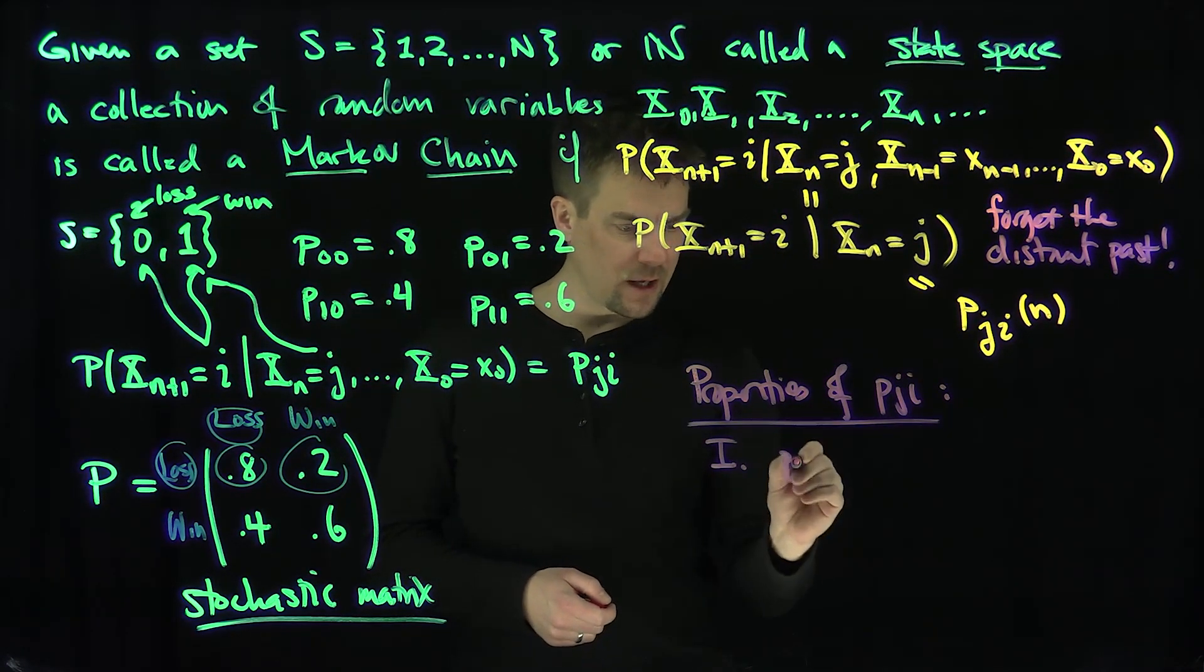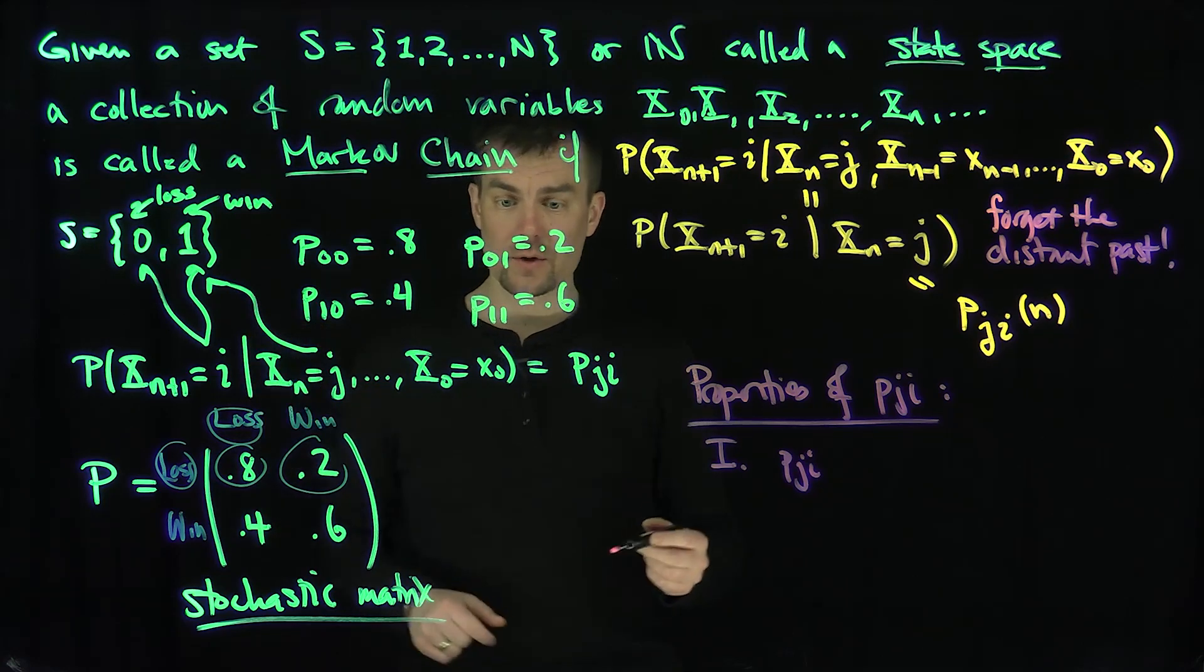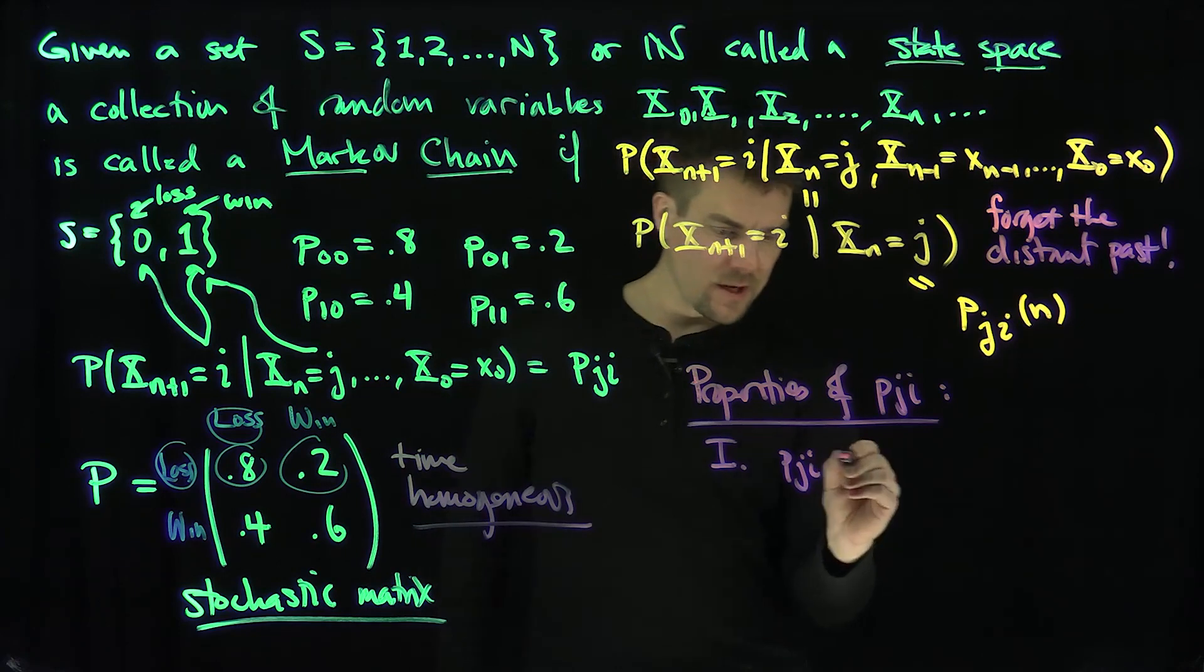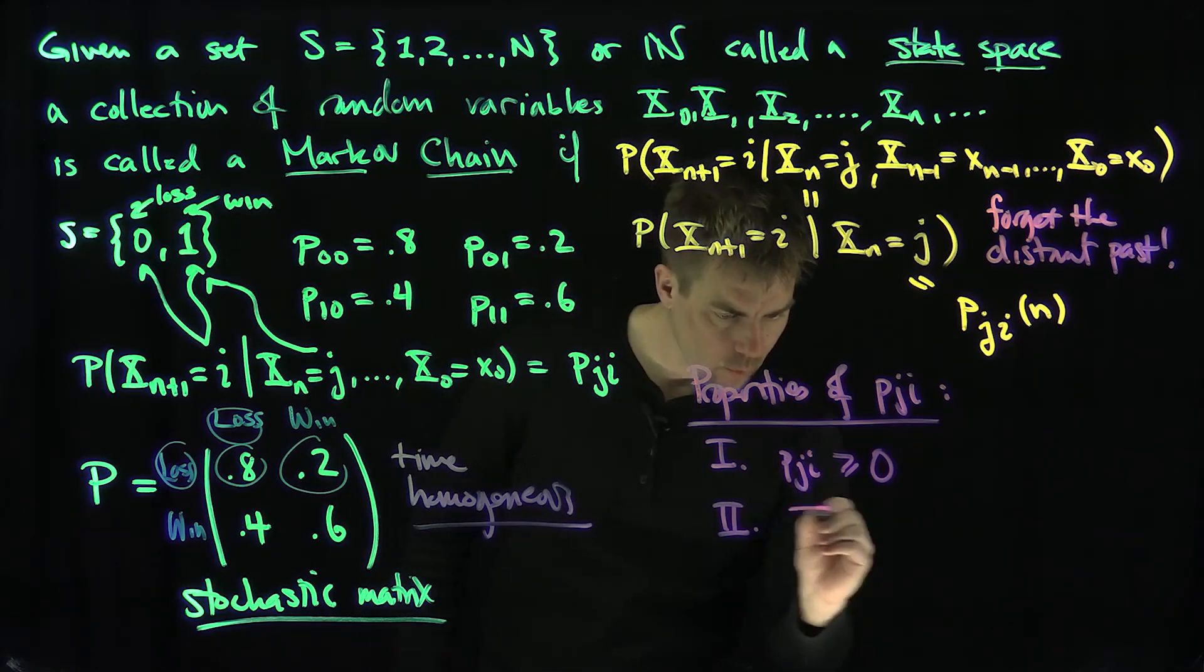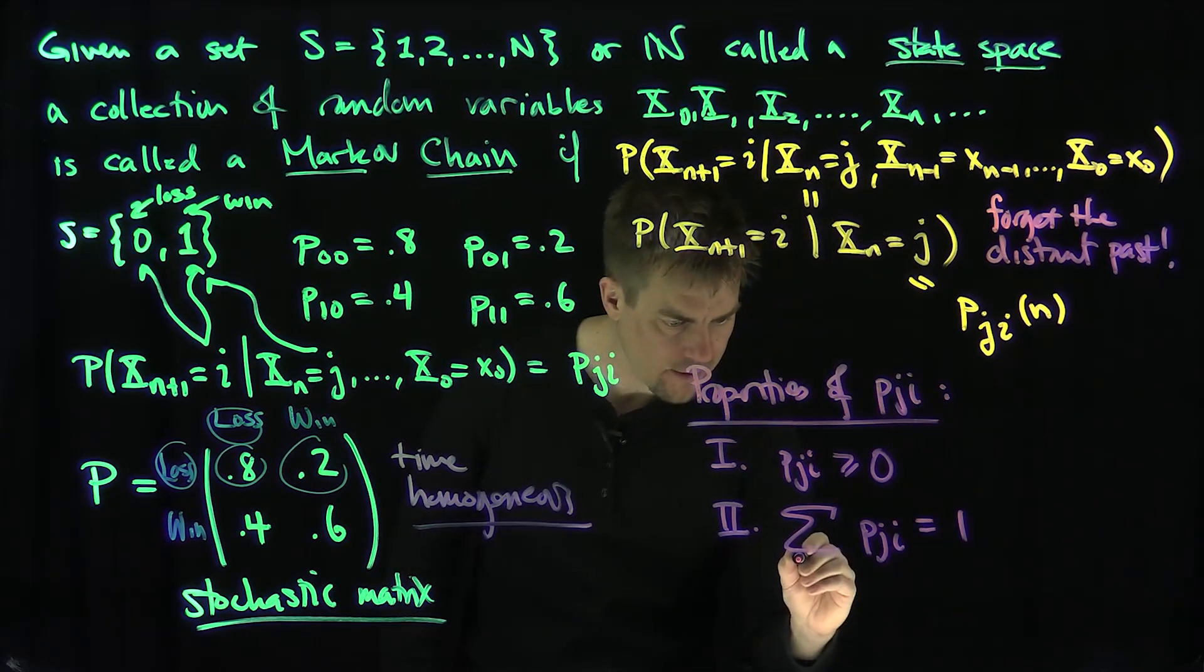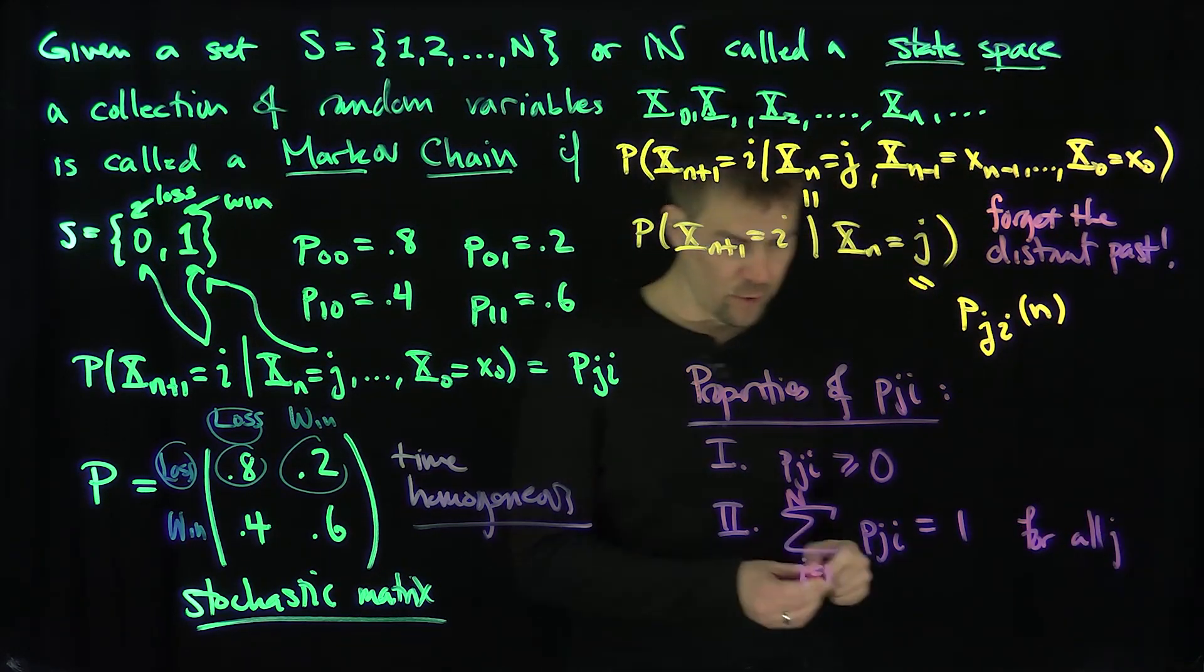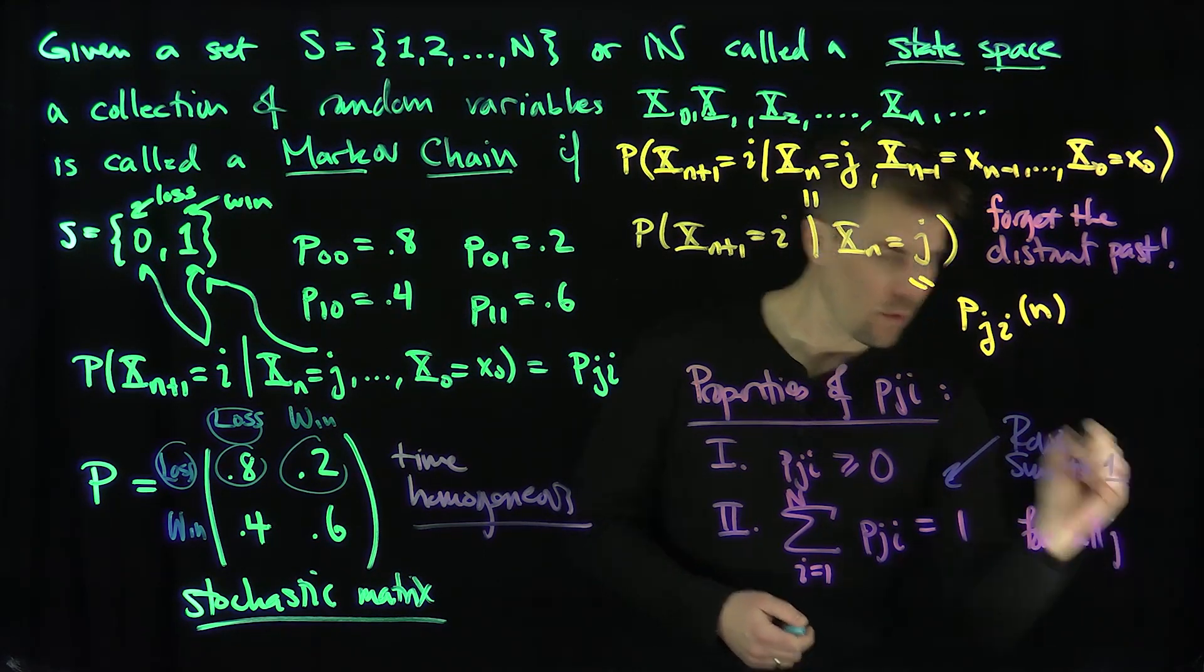Clearly the first property has to be that P_ji, and in principle this can depend on n, but for our example this is not the thing at n, this is for any time. This is called time homogeneous, doesn't depend on time. These numbers have to be non-negative because they're probabilities. And they have to sum up, every row in this matrix has to sum up to one. If I sum the P_ij, this has to be equal to one. If I sum over i from one up to N in this general case, it has to be equal to one for all j. That's just equivalent to saying that the rows sum up to one.